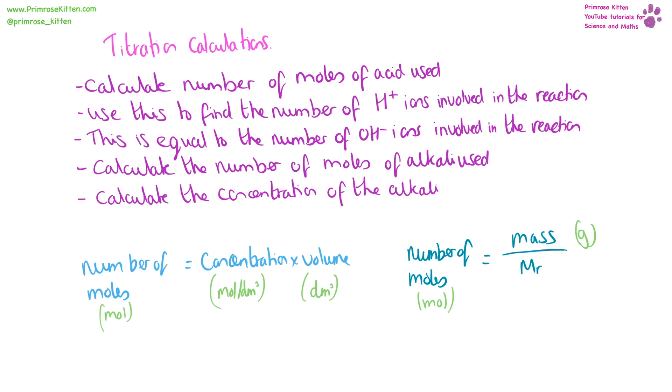For titration calculations, we first need to calculate the number of moles of acid used. We can use this to find the number of hydrogen ions involved in the reaction. This is going to be equal to the number of hydroxide ions at the point of neutralization. We can use this to calculate the number of moles of alkali used and the concentration of the alkali.